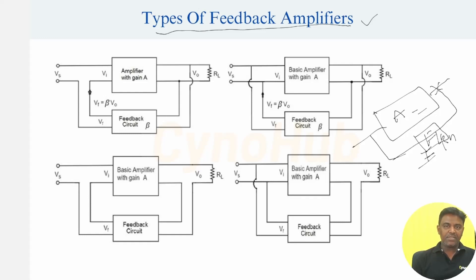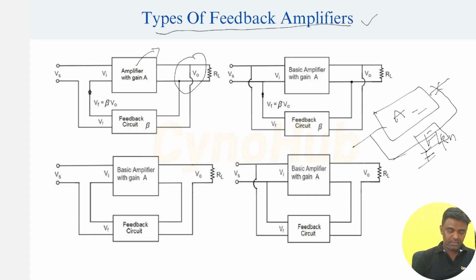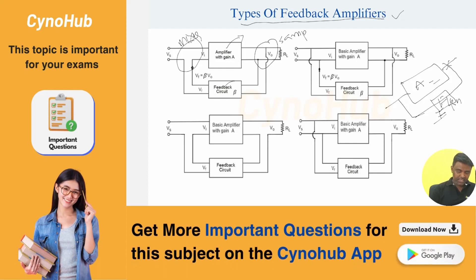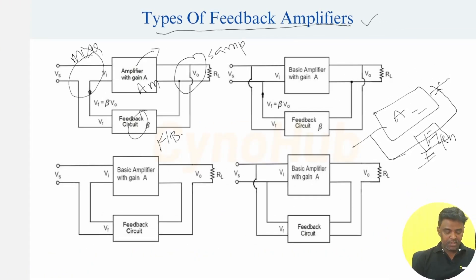We'll see what are the different types of feedback amplifiers. Generally we have four types. Within any feedback amplifier, we basically need to define: first the amplifier, then the sampling network, then the mixer network, then the feedback network. So within any feedback amplifier, we have the amplifier, the sampling network, the feedback network, and the mixer network.